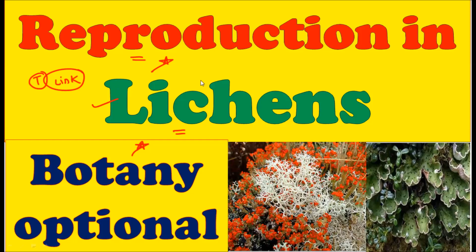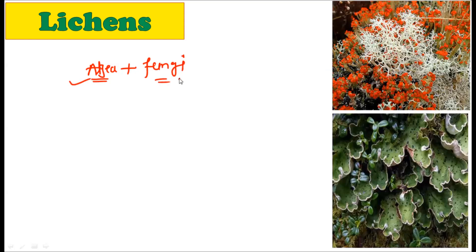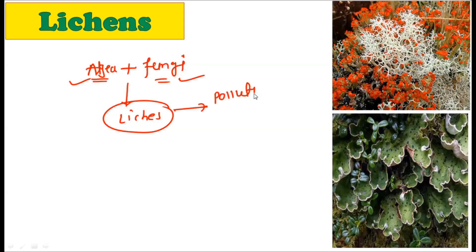So let's learn about the Reproduction in Lichens. First of all, let's have some general idea about what Lichens are. As we have studied in previous videos, Lichens are the combination of algae and fungi. One partner is from the algal group while the other is from the fungal group, and their combination together is called the Lichen. Lichens are generally grown in pollution-free areas because they are quite sensitive to pollution.